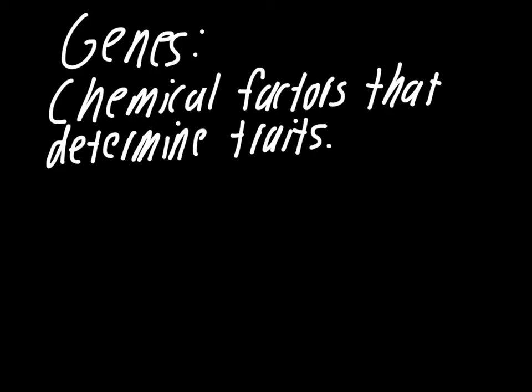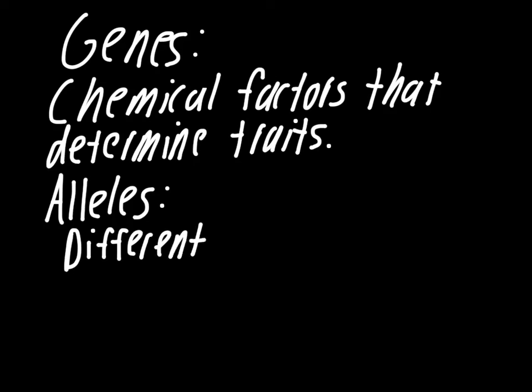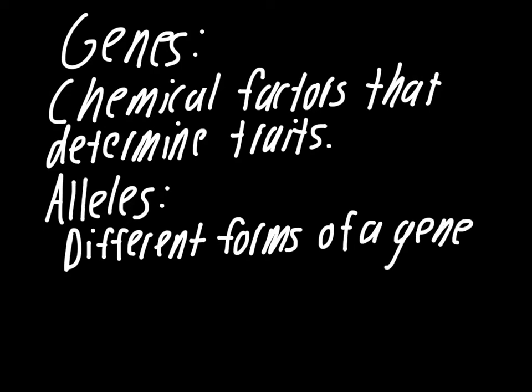The next one is alleles. Alleles are different forms of a gene. So we talked about some of these things with the pea plants already. This would be like a gene for the pea color and then the color being either yellow or green.